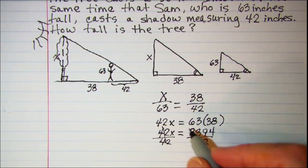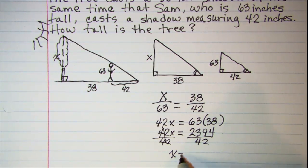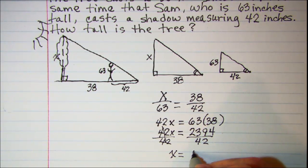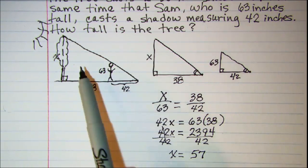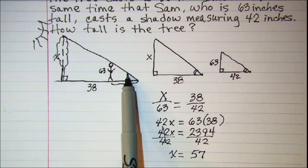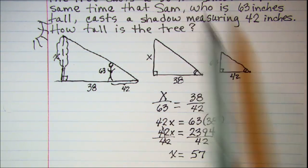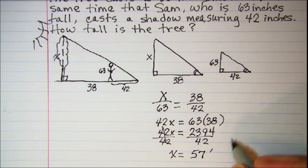These will cancel and X is equal to 57. And for the tree measurements they are in feet. So we'll just put that measurement on there also.